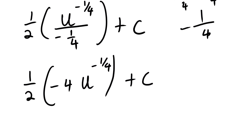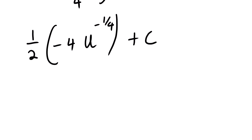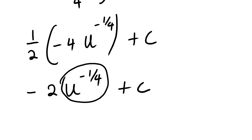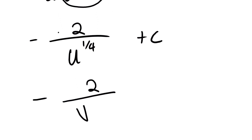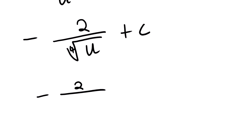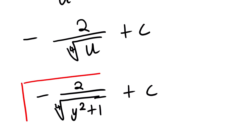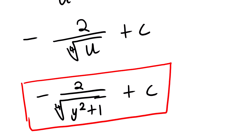Instead of dividing by negative 1 over 4 we multiply by negative 4, giving negative 2 times u to the power negative 1 over 4 plus C. Since this is raised to the power negative 1 over 4, we can write it as negative 2 over the fourth root of u, plus C. Then substituting back u equals y squared plus 1, our final answer is negative 2 over the fourth root of y squared plus 1, plus C. That's it for this lesson video. This is Pabula SJ. Thank you very much.